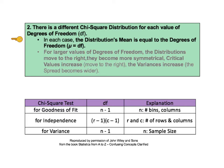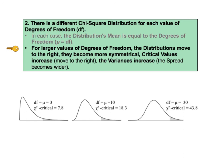Key to understanding number 2 begins by saying there is a different chi-square distribution for each value of degrees of freedom, df. In each case, the distribution's mean is equal to the degrees of freedom, mu equals df. As this table shows, the formula for the degrees of freedom is different for each of the three chi-square tests. There is a separate chapter in the book for each of these three tests, and individual videos are planned as well. For larger values of degrees of freedom, the distributions move to the right, become more symmetrical, critical values increase, and variances increase — the spread becomes wider. Take a look at how these three chi-square distributions illustrate those points; they are not drawn to scale.